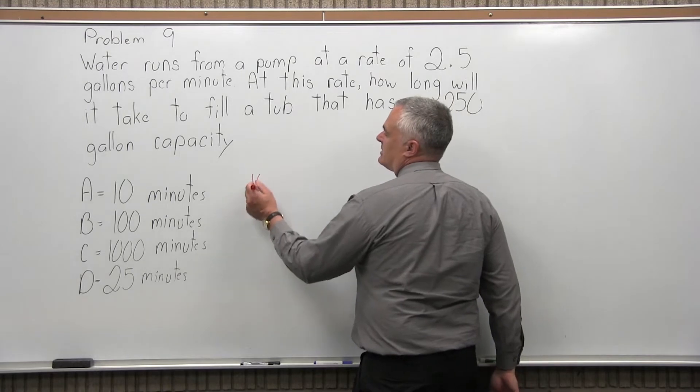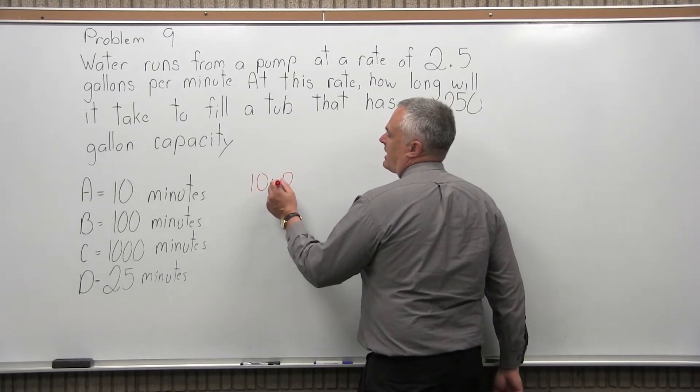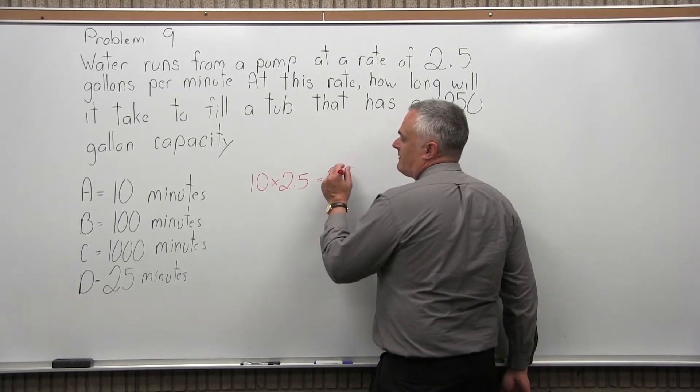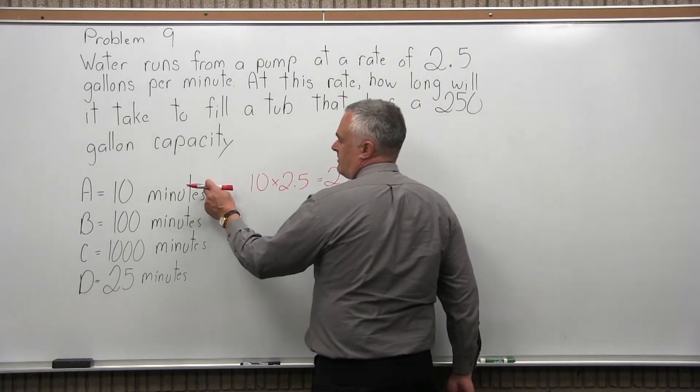So in ten minutes, you get ten minutes of pumping time with two and a half gallons for each minute. You would get 25 gallons pumped into the tub in ten minutes.